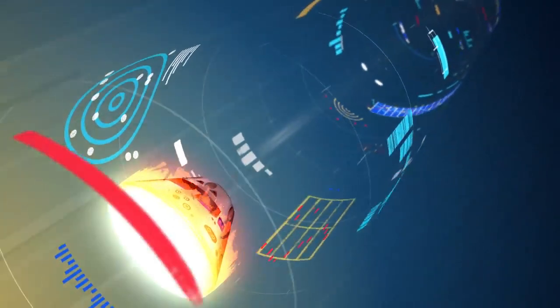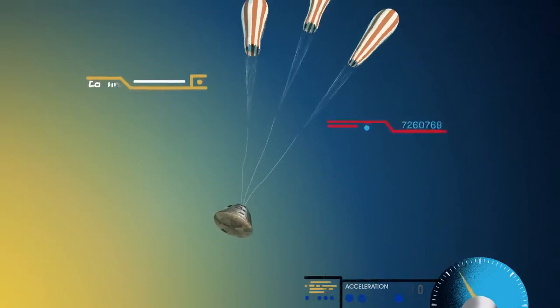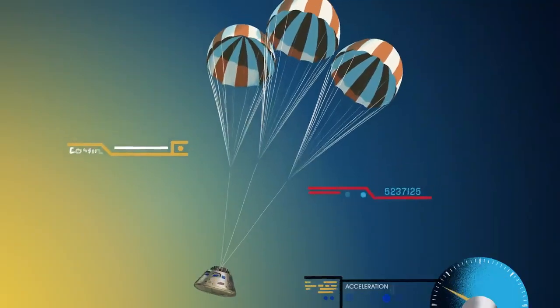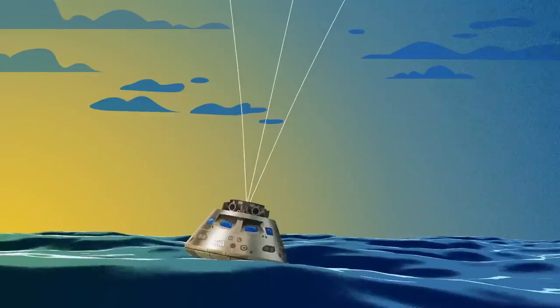With the Orion now at just 300 miles per hour, a series of parachutes uniquely tested and produced for this moment deploy, decelerating the craft to just 20 miles per hour for splashdown.